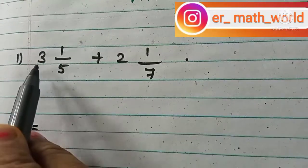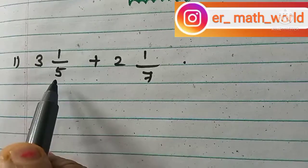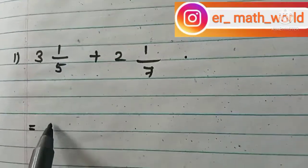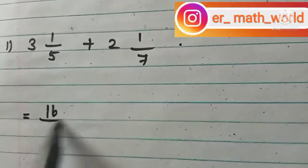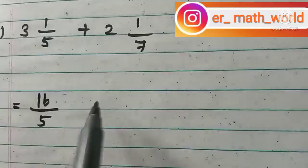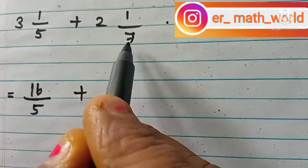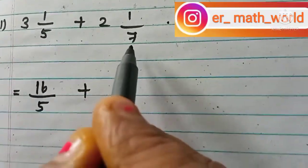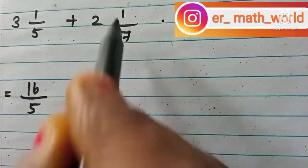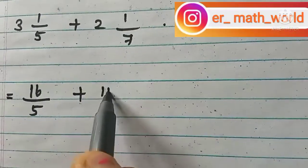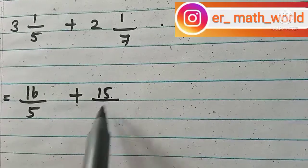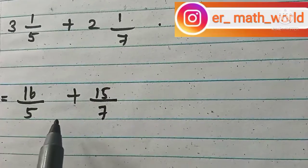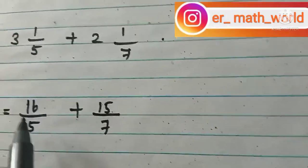3 times 5 is 15, and 15 plus 1 will be 16, so we get 16 divided by 5. Then 2 times 7 is 14, and 14 plus 1 will be 15, so we get 15 divided by 7. This is the way of changing mixed fractions into improper fractions.